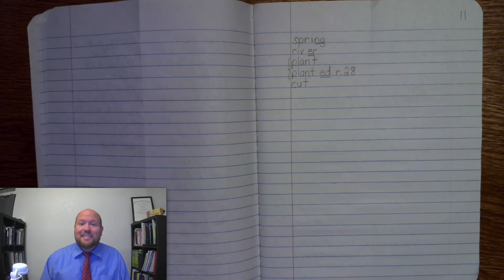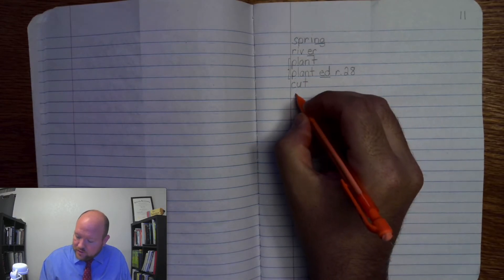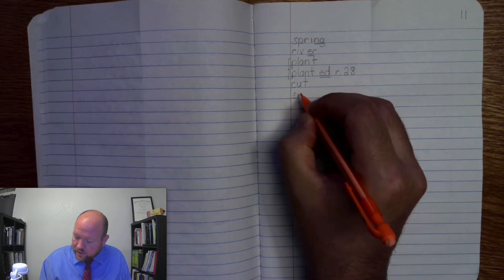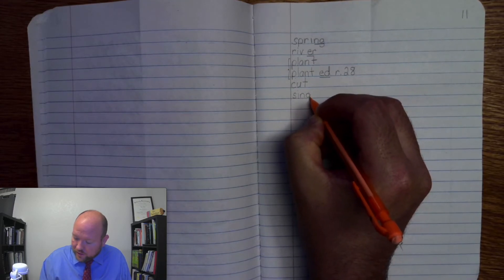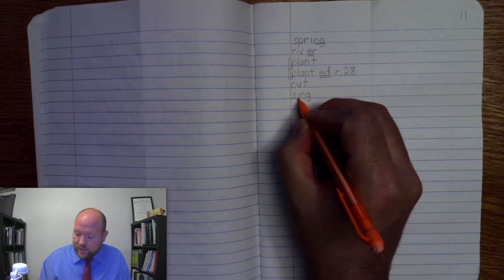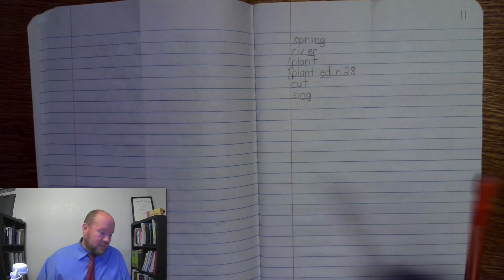Now the next word is sing, like I'm going to sing a song. Sing, base word sing. S-I-N-G, sing. Write it. S-I-N-G, sing. Markings, S-I-N-G, once, sing.